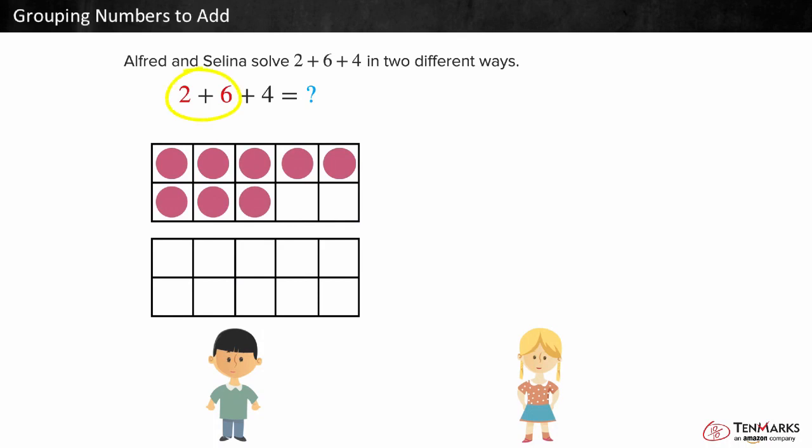Alfred solves 2 plus 6 first. This makes 8. He still needs to add 4, so he needs to add 4 more counters. The total is 12.